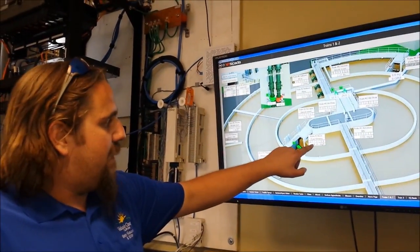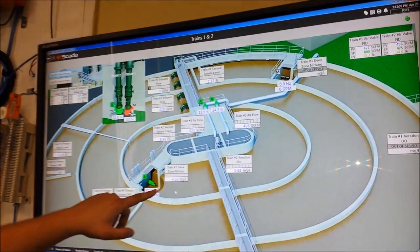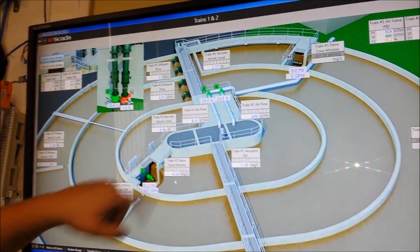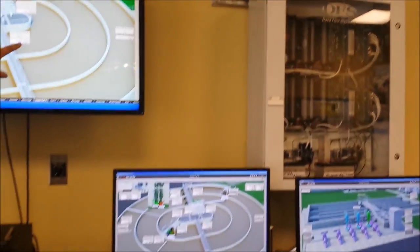A probe in train two, and we have a probe in train one, and this is all monitored in real time. So we know constantly what our nitrates are at, along with the DO as well.